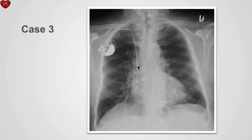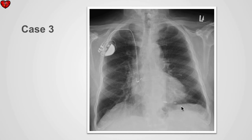This patient has an AV sequential pacemaker. There is good position of the atrial lead. If we follow the ventricular lead, we see that there is a coil that has formed within the ventricle. The tip, however, lies in good position.